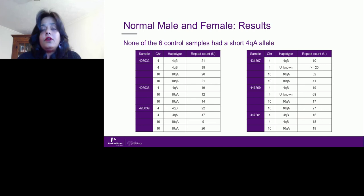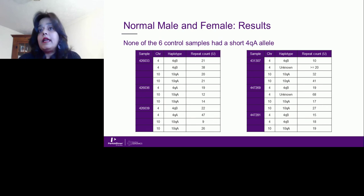For the normal male and female results, you can see results from chromosome 4 and chromosome 10 — which is what we want to map and discern. None of the six control samples had the contracted or short 4QA allele. The long alleles were visible, with some not countable, but the haplotype was clearly not the contracted allele.